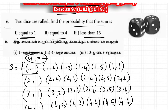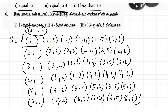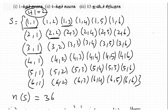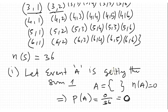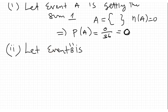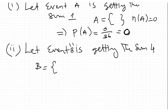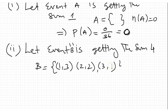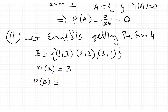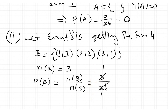Second part: sum equal to 4. Let event B be getting the sum 4. B = {(1,3), (2,2), (3,1)}. Number of elements in B is 3. Then probability of getting sum 4: P(B) = n(B)/n(S) = 3/36 = 1/12.